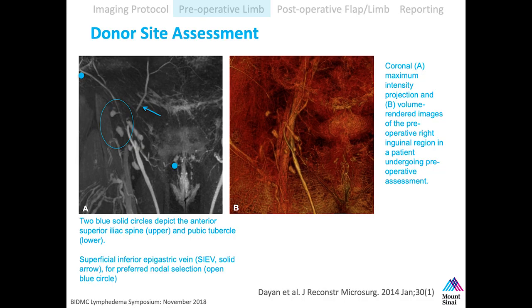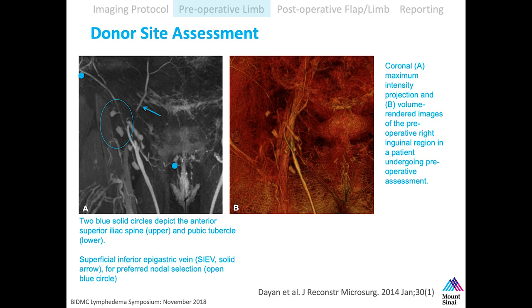Donor site assessment. When we started, we were doing donor flaps from the groin. A lot of flaps now are omental flaps, which are difficult to image because omentum has bowel with air — an enemy of MRI — and motion, another enemy of MRI. For groin flaps, we highlight nodes that are lateral to the SIEV (superficial inferior epigastric vein) and above the inguinal crease. Those nodes drain the abdominal wall rather than the leg, so harvesting them avoids donor site lymphedema compared to harvesting nodes that are more medial or inferior.